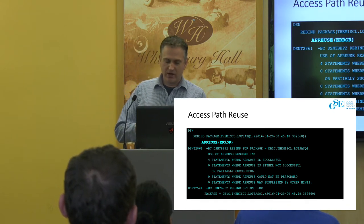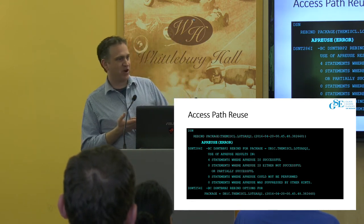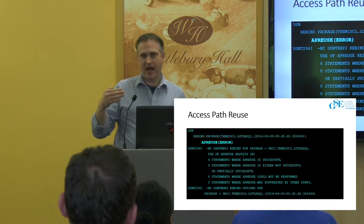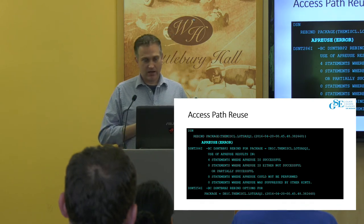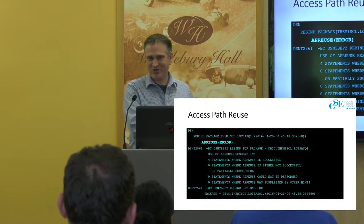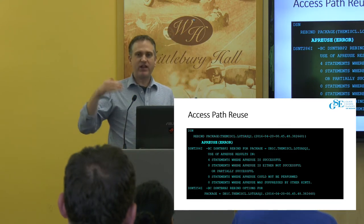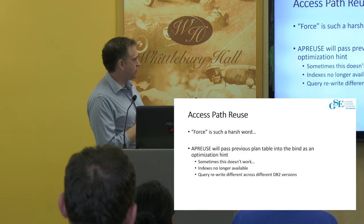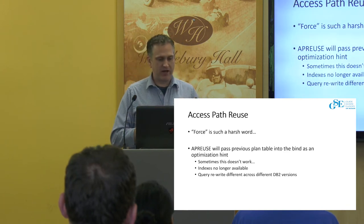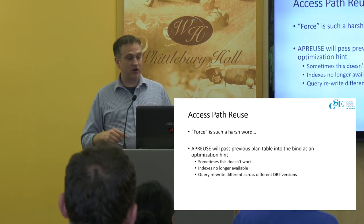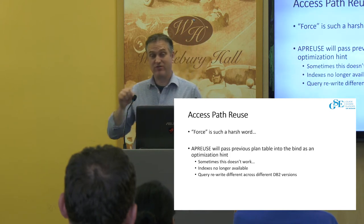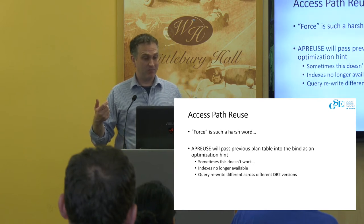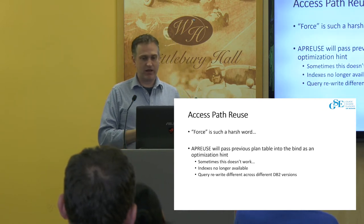I favor an approach that uses both. When I talk to production DBAs, a lot of them tell me they don't have time for that. So if you do a first pass with AP compare, you might get 80% of your packages rebound without issue, and then you've got 20% that you have to look at. Some shops have sent that 20% through AP reuse to force the use of old access paths, but they at least have a list of things that want to change and can decide whether or not to accept that change. Remember, force is a harsh word — it's sending the old access paths in as a hint, and sometimes the hint doesn't work.